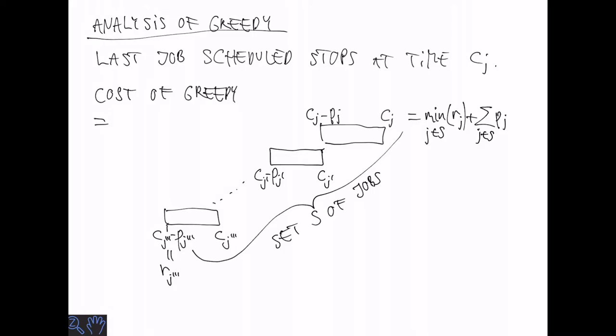So the cost of greedy, in other words, is cj minus dj which we can express using this formula.